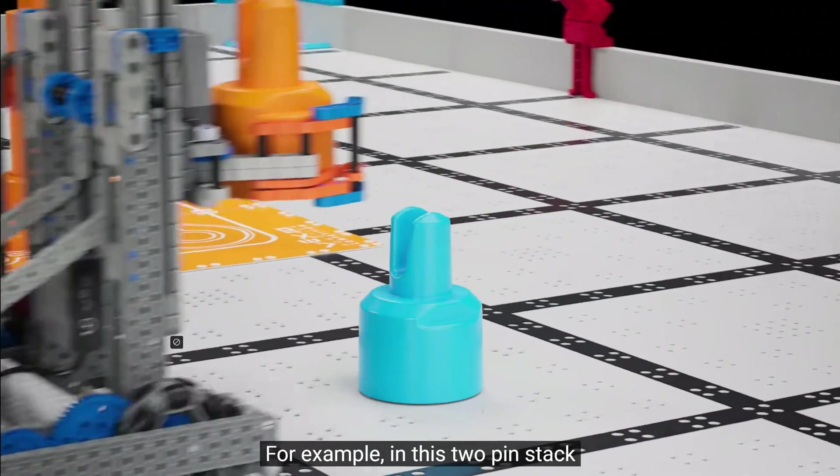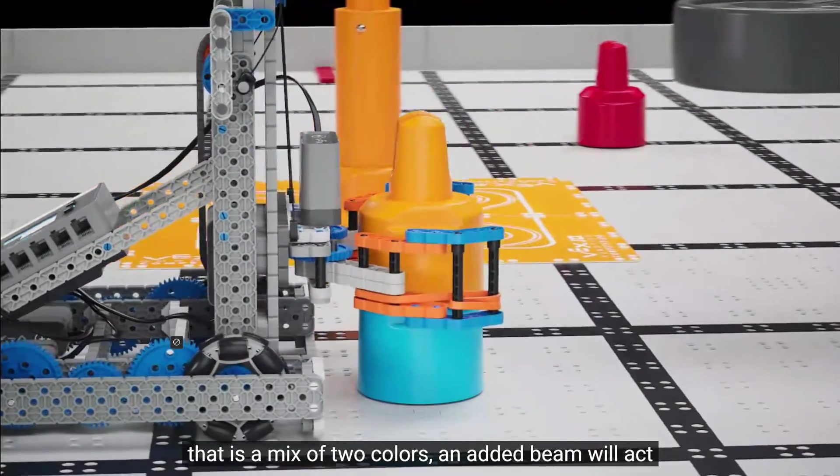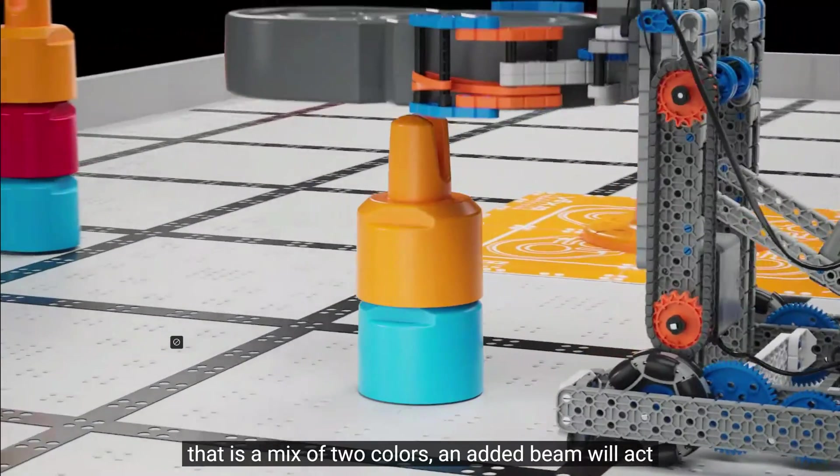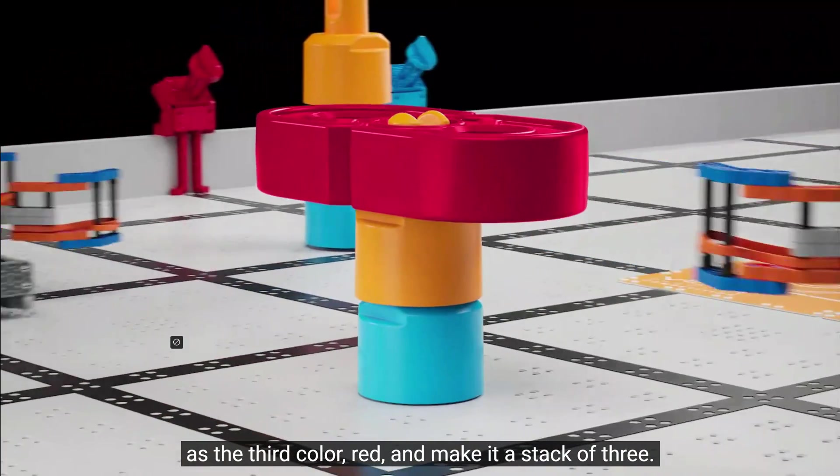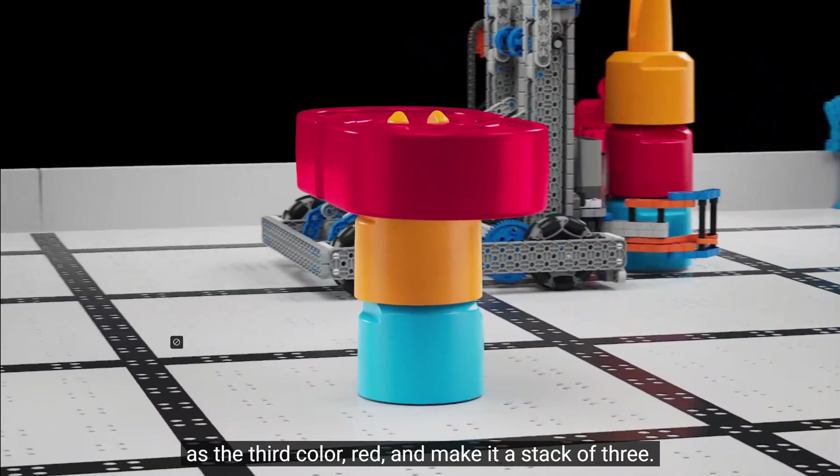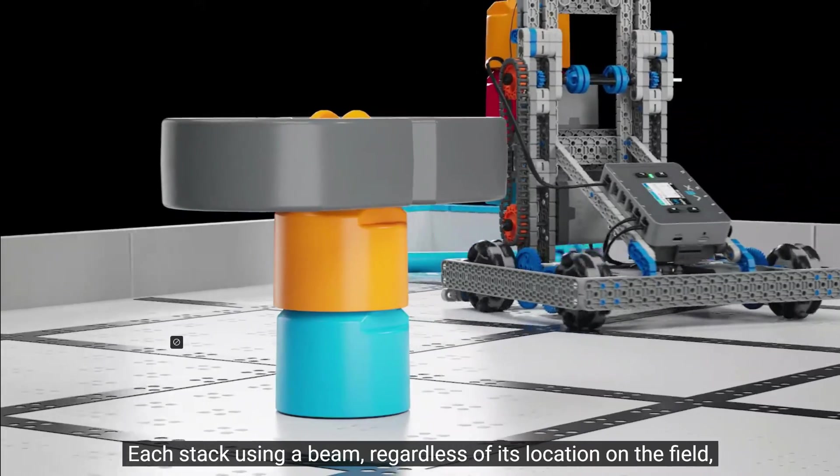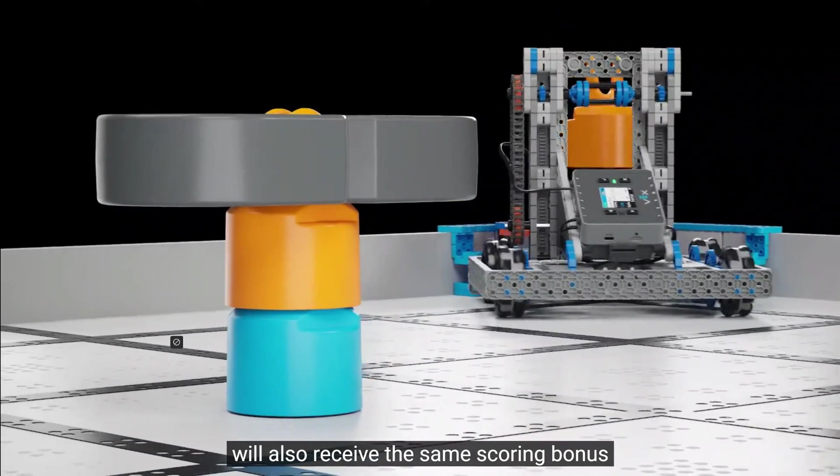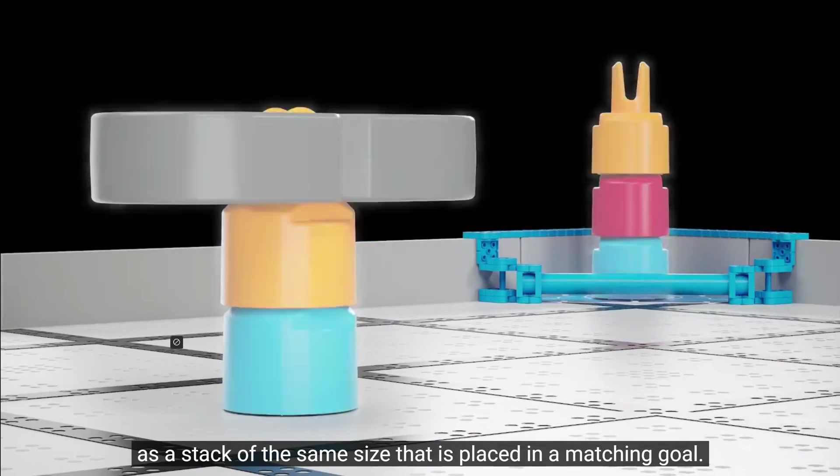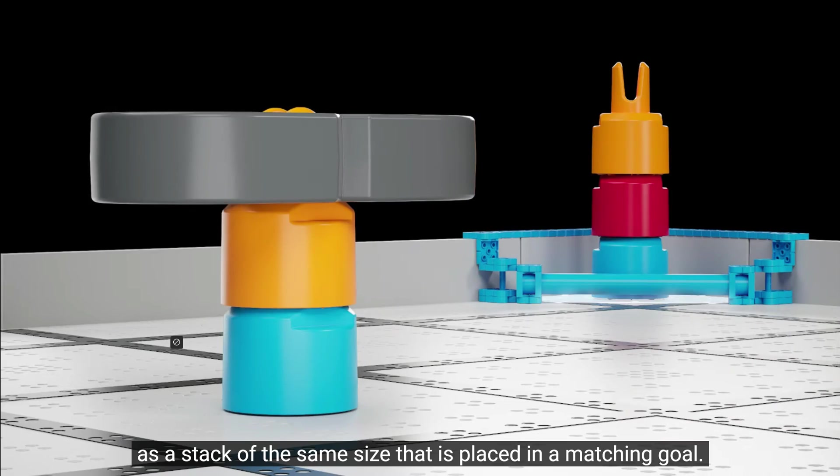For example, in this two pin stack that is a mix of two colors, an added beam will act as the third color red and make it a stack of three. Each stack using a beam, regardless of its location on the field, will also receive the same scoring bonus as a stack of the same size that is placed in a matching goal.